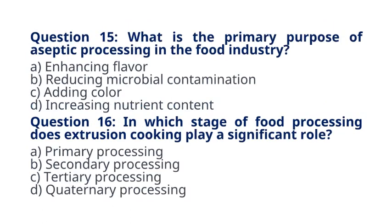Question 15. What is the primary purpose of aseptic processing in the food industry? A. Enhancing Flavor B. Reducing microbial contamination C. Adding Color D. Increasing Nutrient Content. The correct answer to question 15 is option B. Reducing microbial contamination. Explanation: aseptic processing involves sterilizing food and packaging separately and then combining them under sterile conditions to reduce microbial contamination.